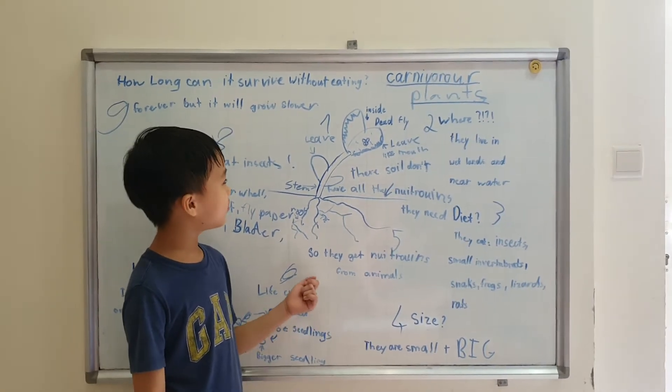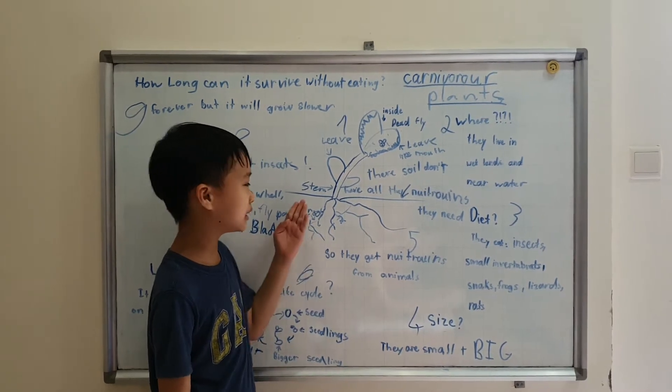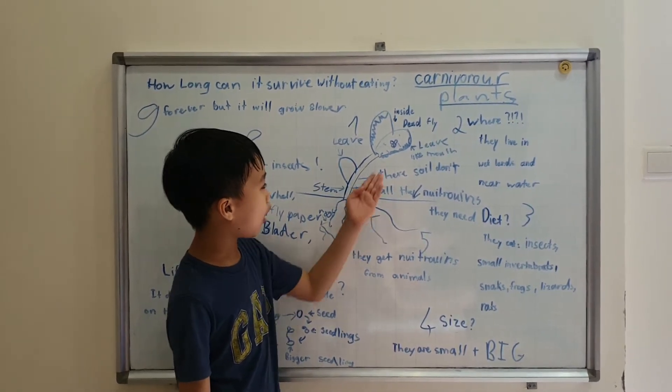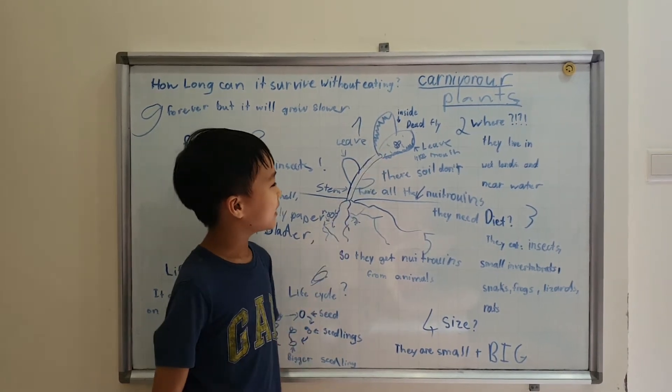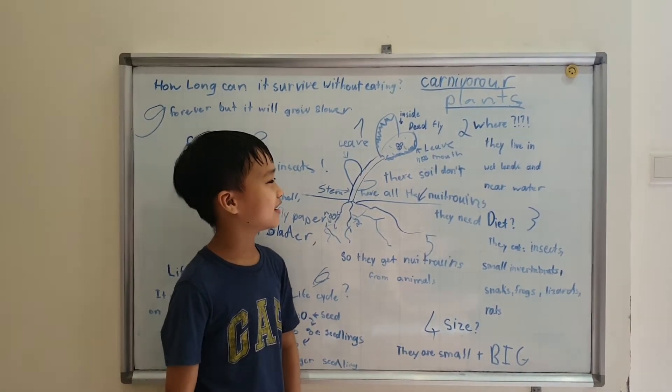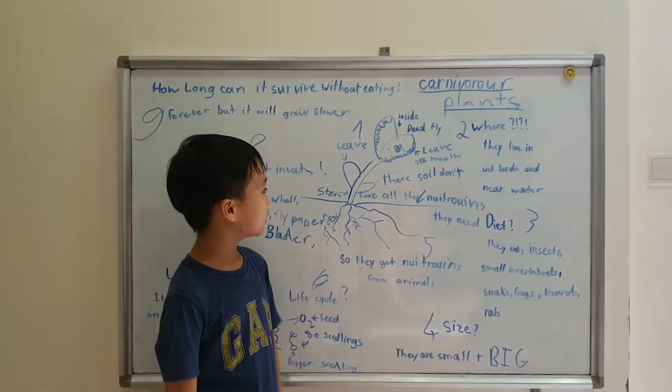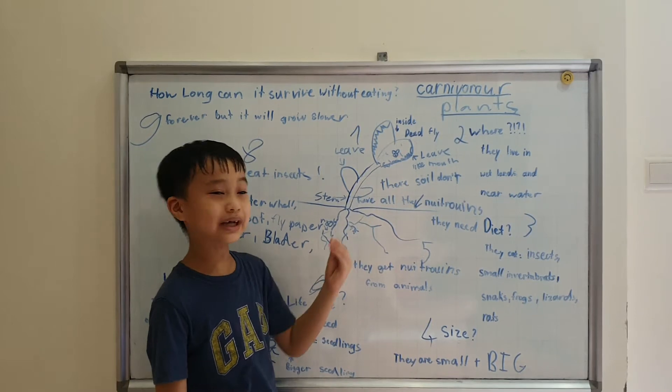The Venus flytrap has the simple parts which are stems, leaves and roots. And the hard part is a leaf-like mouth.